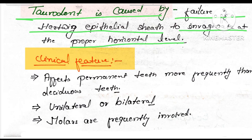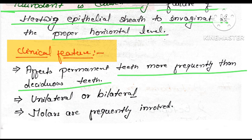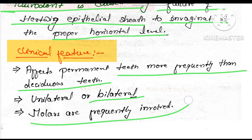Clinical features: taurodontism affects permanent teeth more frequently than deciduous teeth. It can be unilateral or bilateral. Molars are most frequently involved.